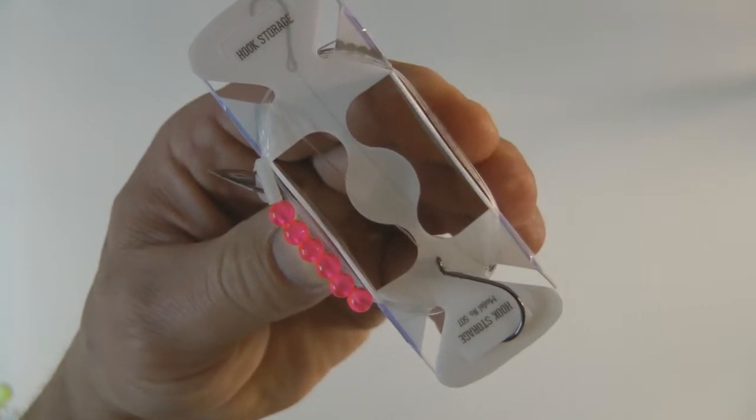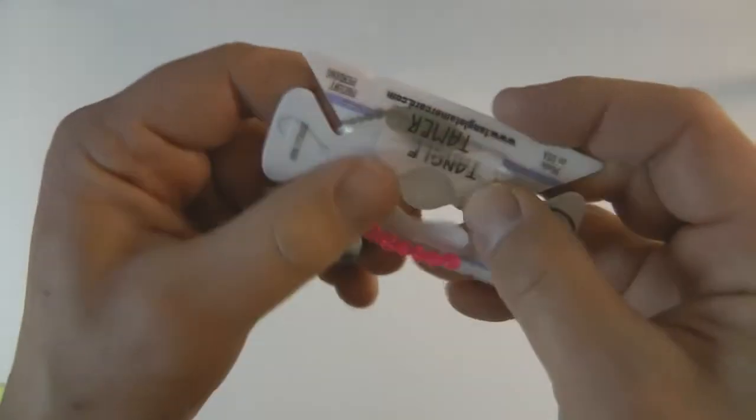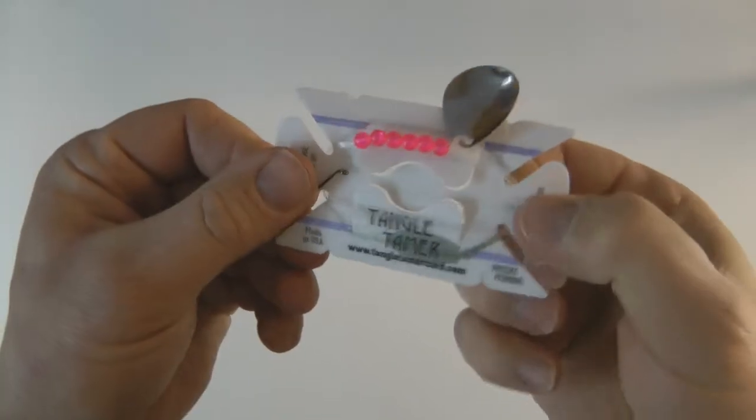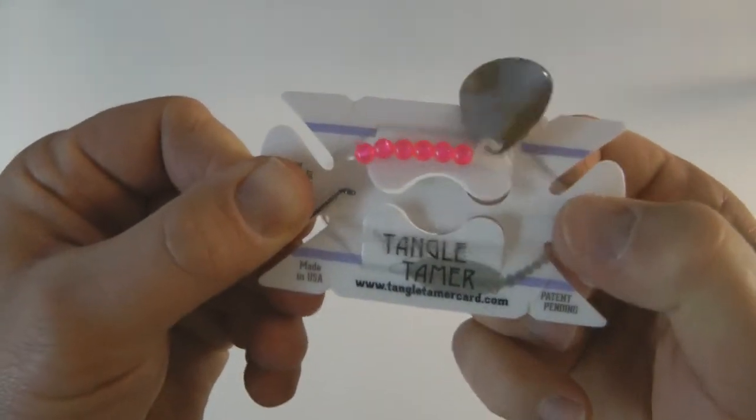When the line is wrapped around the card, it's tight. But once you fold the card flat, it relaxes the line and minimizes the kinks.